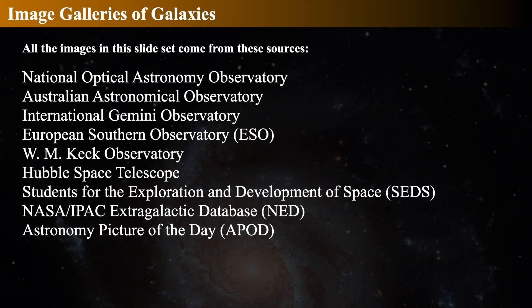The images in this video were obtained from many different sources: the National Optical Astronomical Observatory, the AAO or Australian Astronomical Observatory, the Gemini Observatory, the European Southern Observatory, the Keck Observatory on Mauna Kea, and many from the Hubble Space Telescope. The NED database is an excellent NASA database containing amazing collections of galaxy images. Also check out the wonderful Astronomy Picture of the Day — Robert Nemiroff at Michigan Tech and Jerry Bonnell at the University of Maryland have curated daily astronomical images since 1995.